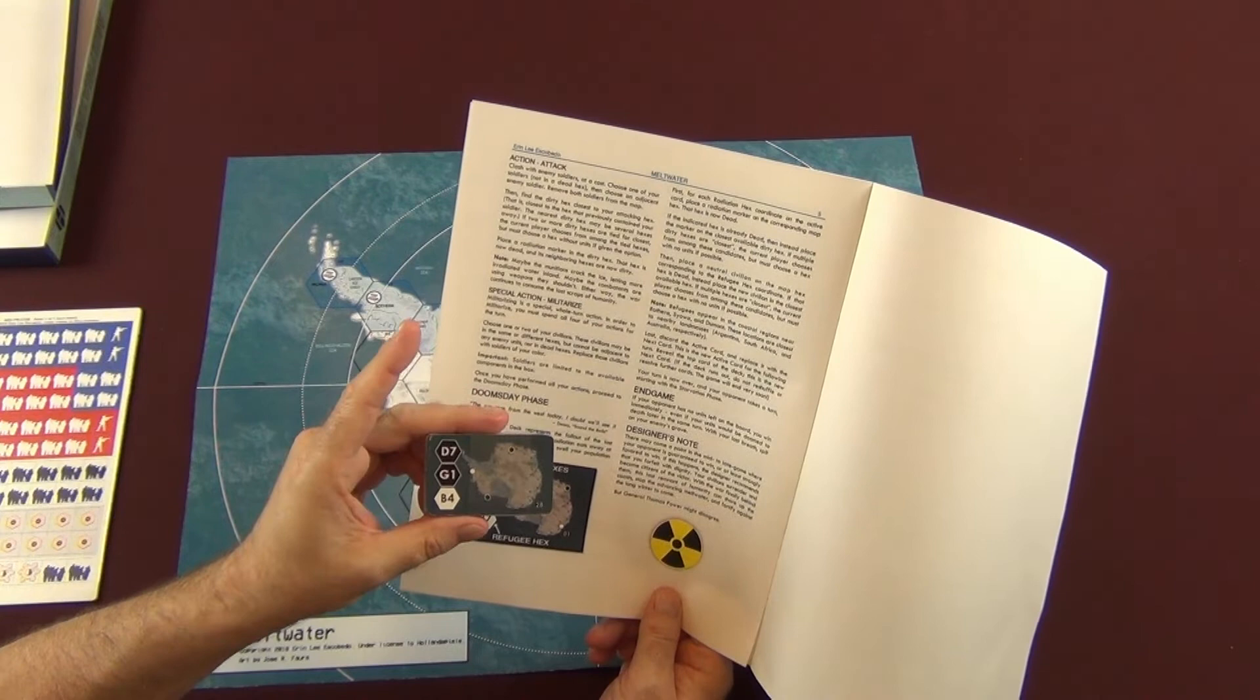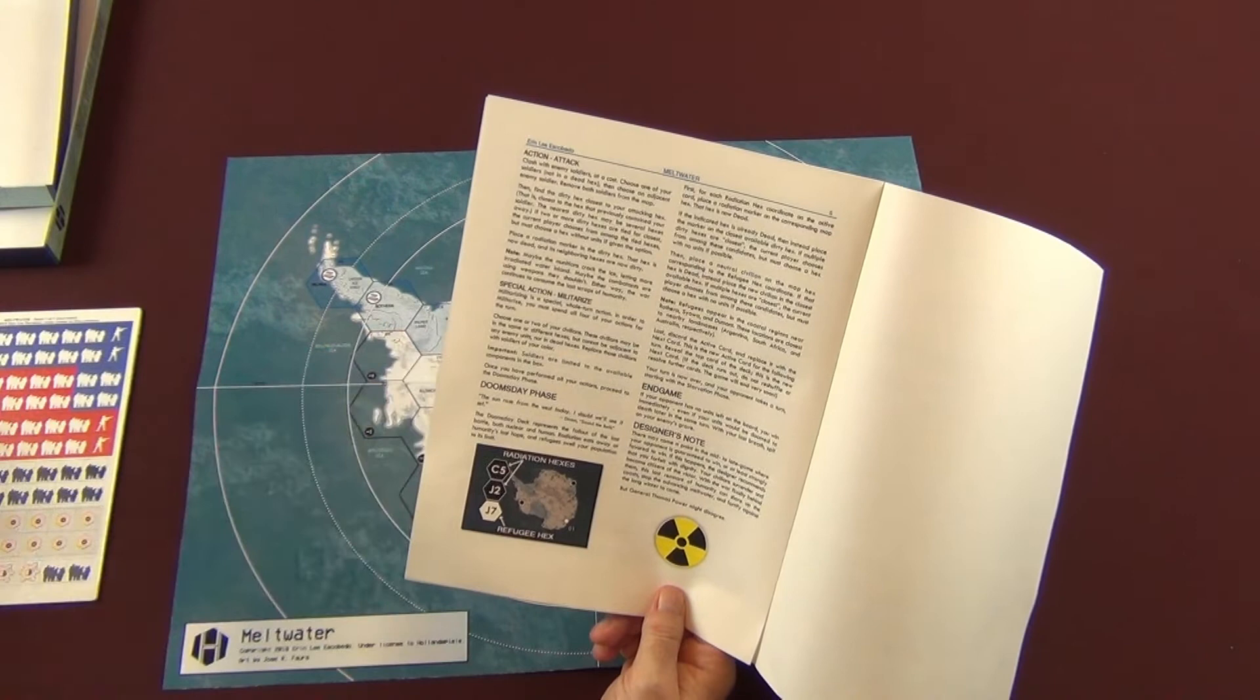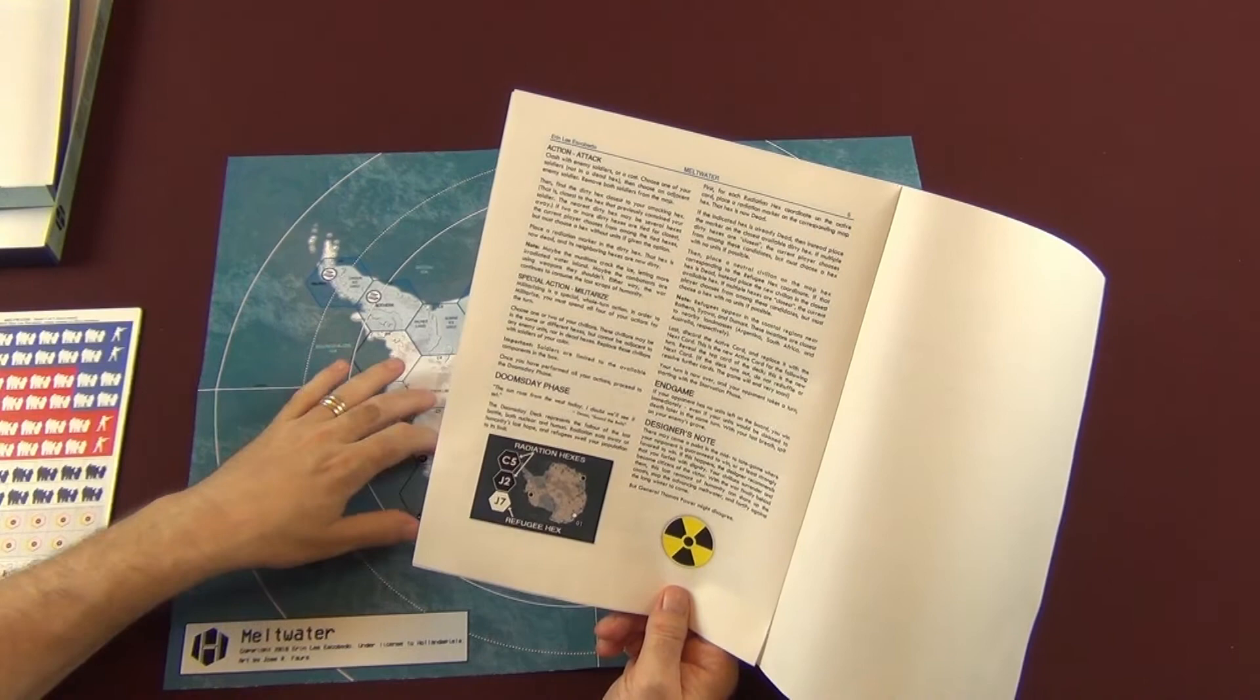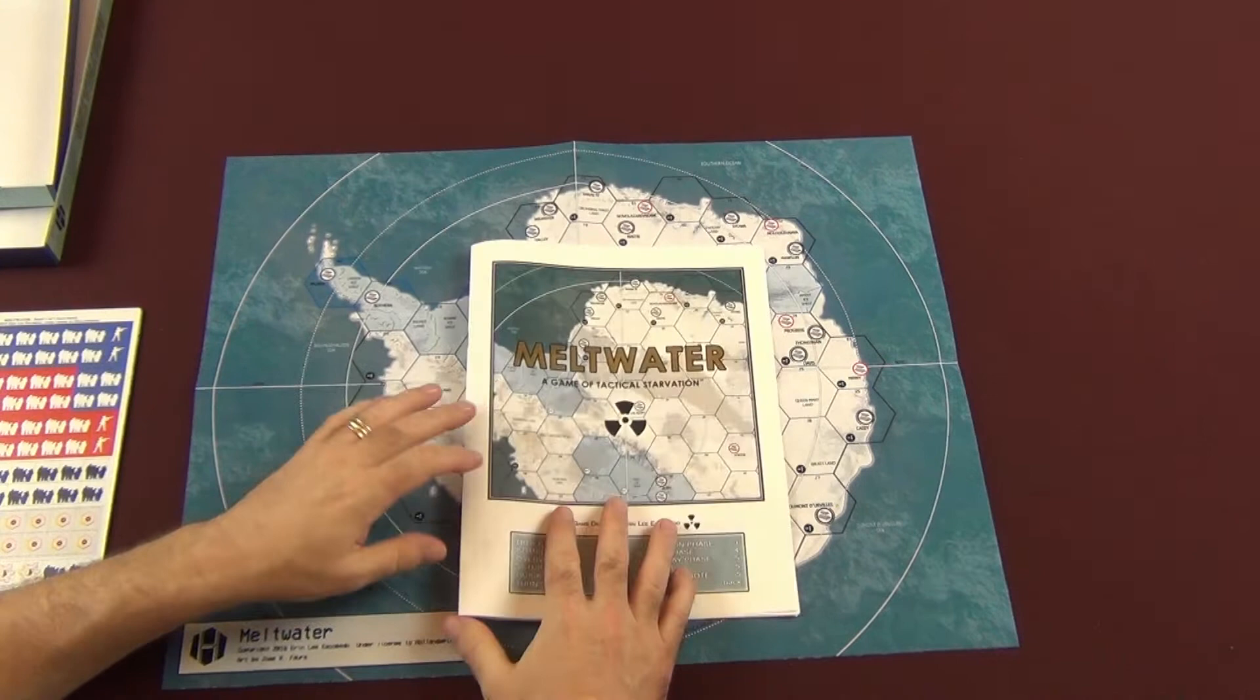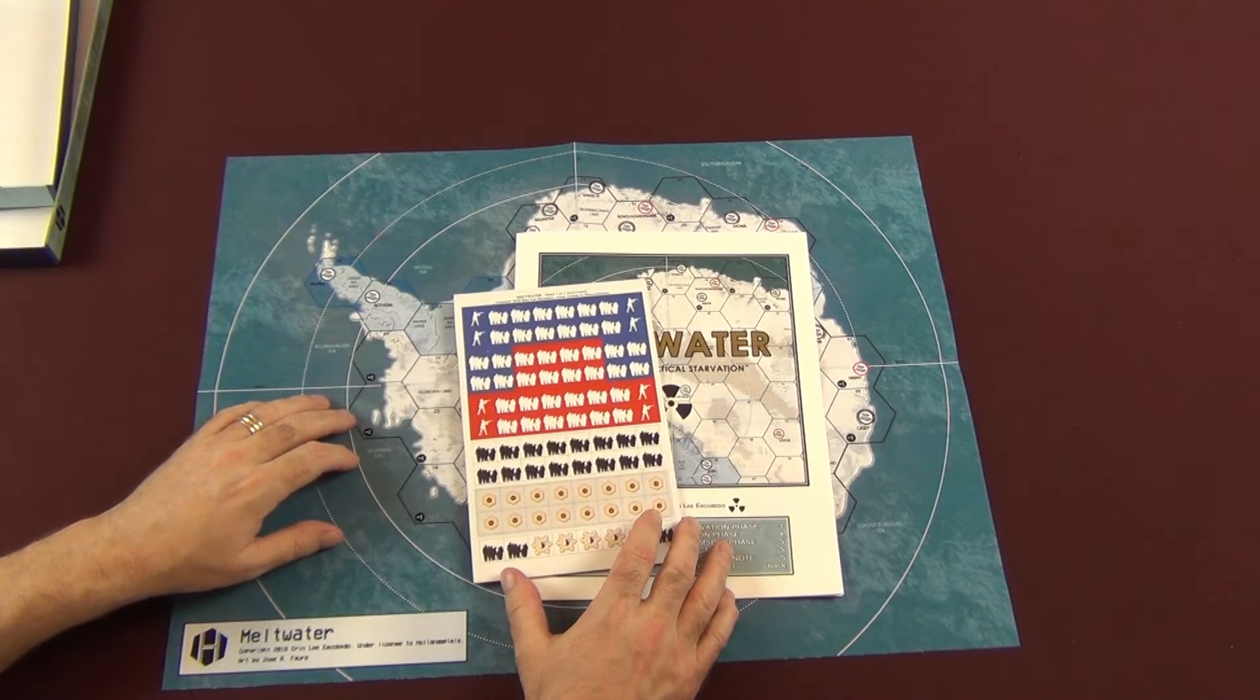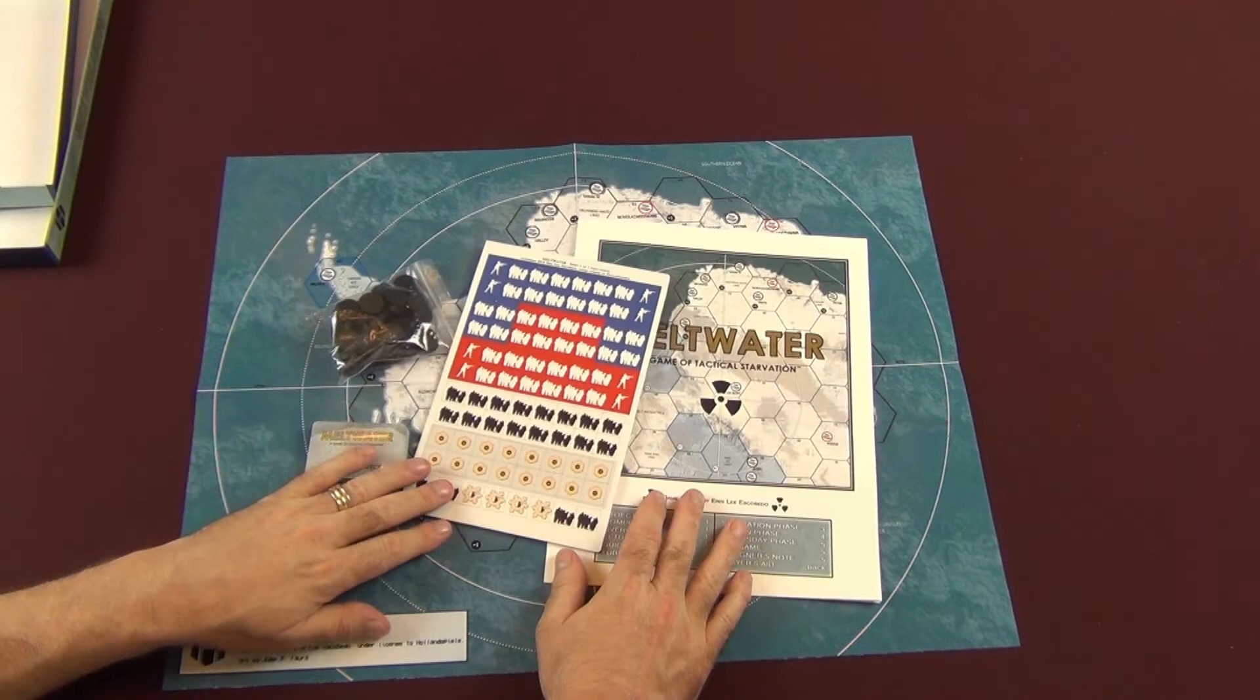And then you have doomsday phase, which is where you take these cards that I talked about earlier and you will put radiation hexes. You will put these radiation markers, these black wooden disks, and you'll place them in the hexes and that will signify dead hexes. And then you also have a refugee hex as well. And that is the end of the rules. It's a very short rule book, pretty easy to read through and get to playing, it looks like, within a couple minutes.